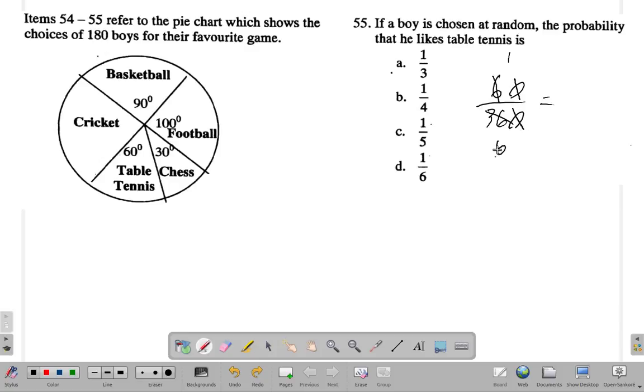That gives you 1 over 6, which is D. And so for 55 is D.